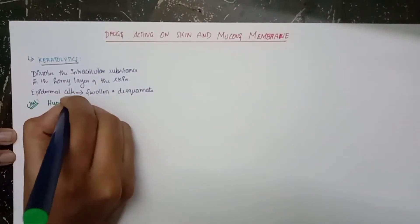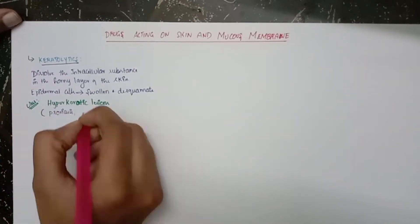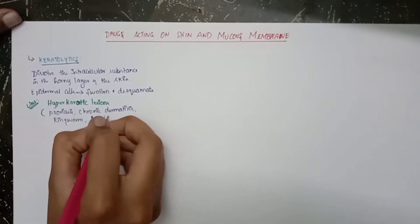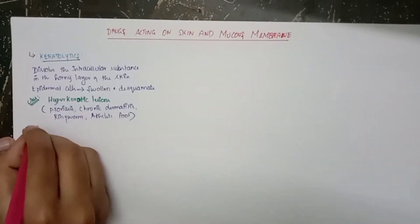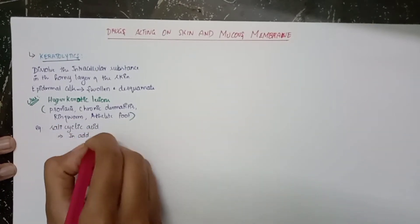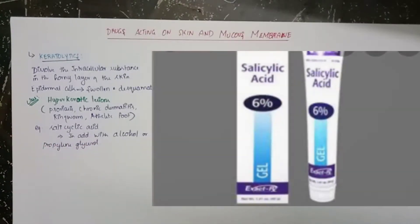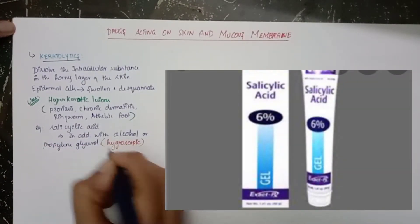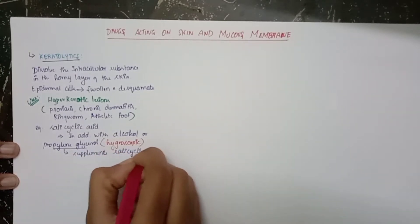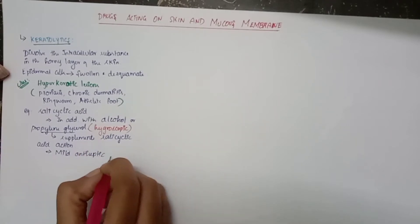The catalyptics are used in hyperkeratotic lesions, which are nothing but psoriasis, chronic dermatitis, ringworm infection, athlete's foot, etc. Examples of catalyptics are salicylic acid—sorry, I made a spelling mistake, it's salicylic acid, not salicyclic. It is given in addition with alcohol or propylene glycol. The propylene glycol supplements salicylic acid action.